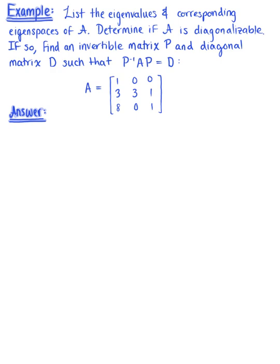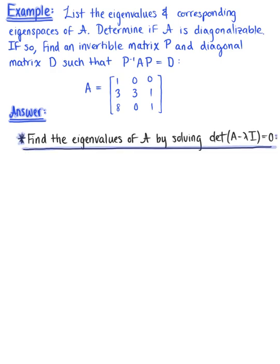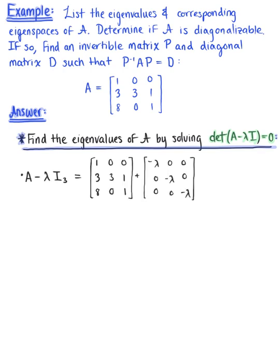The first thing we need to do is find the eigenvalues of matrix A by solving the characteristic equation. Looking at this characteristic equation, we need to find matrix A minus lambda times the identity matrix. Combining up those like terms, we are left with the 3 by 3 matrix, going across row 1: